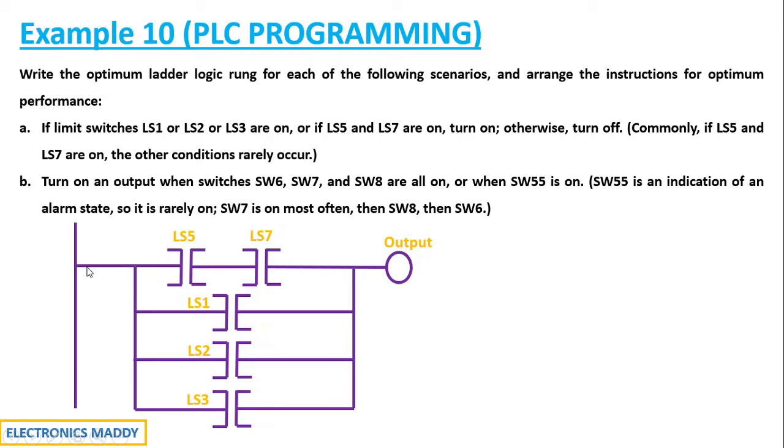If this is true, automatically the output will be high. In that case, it will reduce the amount of time required to check the scans. It doesn't have to check LS1, LS2, LS3. Each of the rungs need not be checked. Only the first rung if it is checked, it is more than enough and that is why you will have an optimum ladder logic.